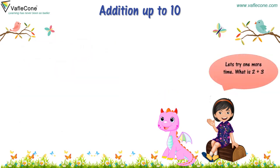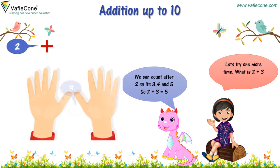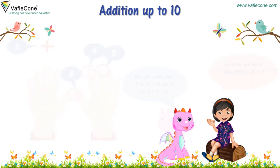Let's try one more time. What is 2 plus 3? We can count after 2. So it's 3, 4, and 5. So, 2 plus 3 is equal to 5. Wow!